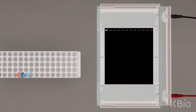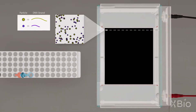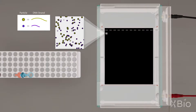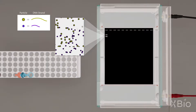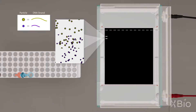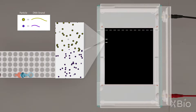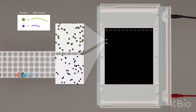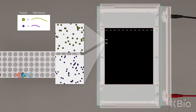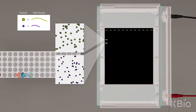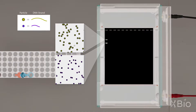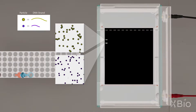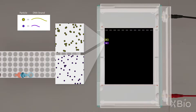Meanwhile, the gel acts as a sieve. Smaller molecules tend to move more quickly through the gel, while larger molecules move slowly. After an hour or two, the individual species will separate according to how fast they move, and when enough of the molecules migrate at the same speed, they can be visualized as bands.